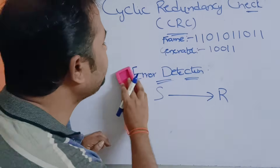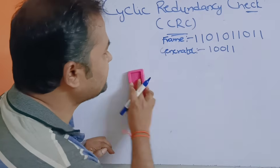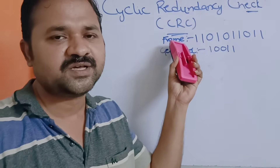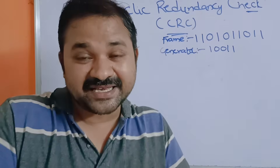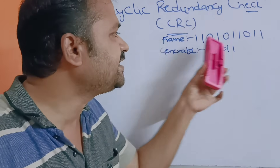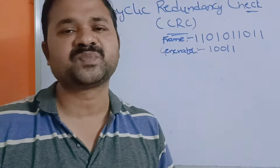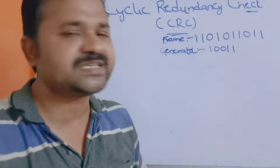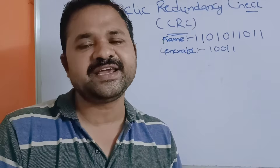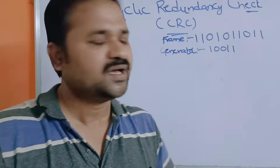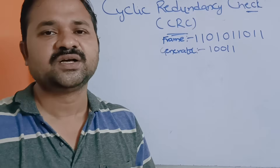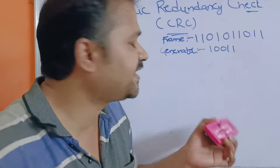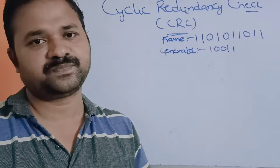CRC means Cyclic Redundancy Check. In this example we have a frame, which is nothing but the message. The sender wants to send this message to the receiver, but some data may be lost due to noise or error. In that occasion, the receiver checks whether it is the correct message or not with the help of the CRC approach.